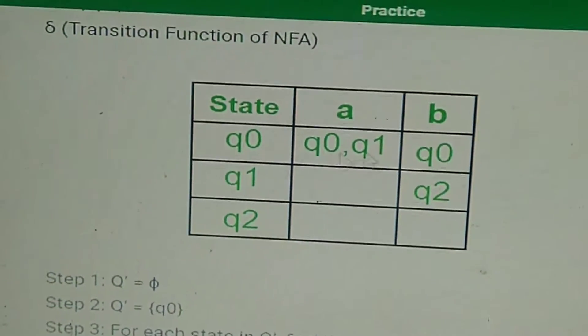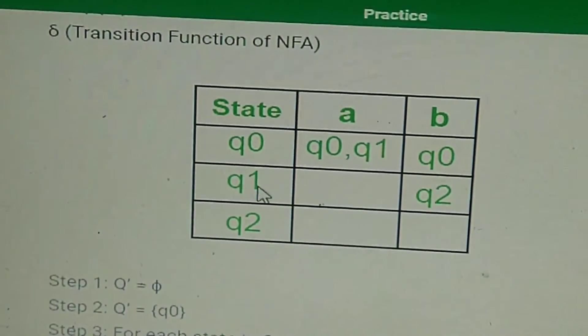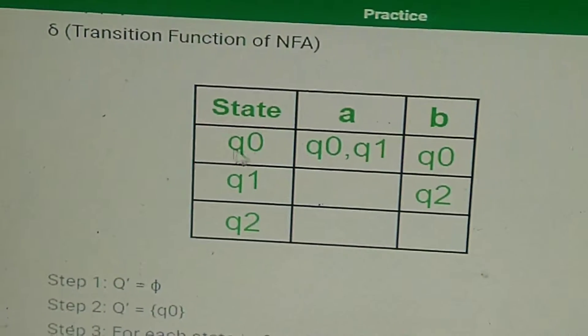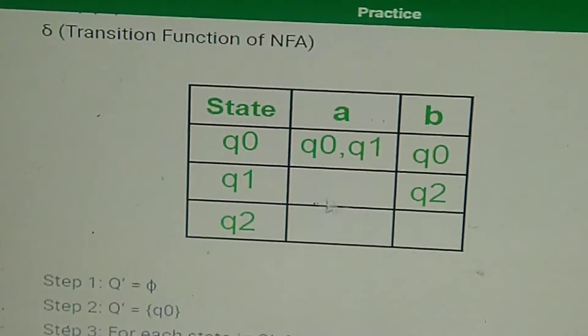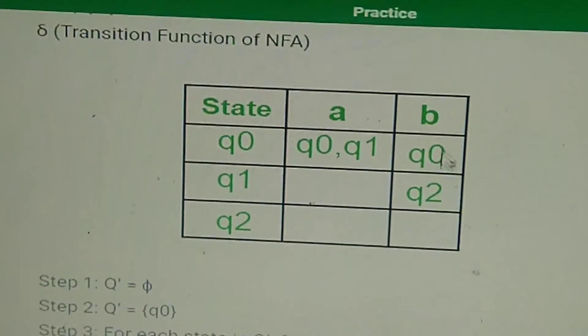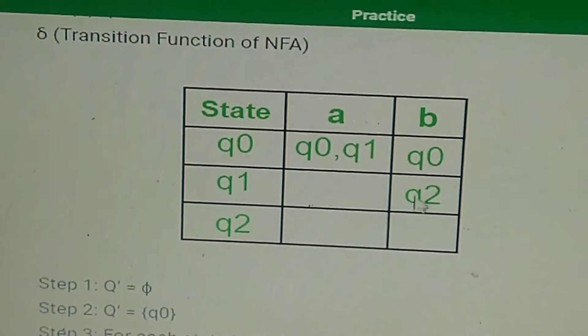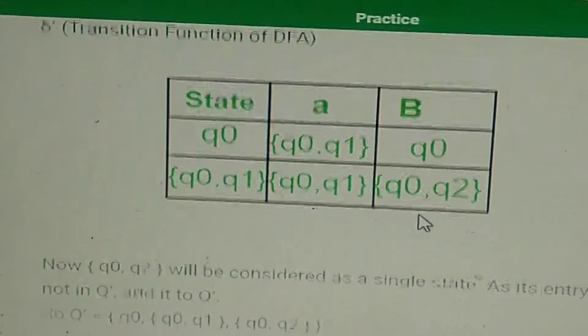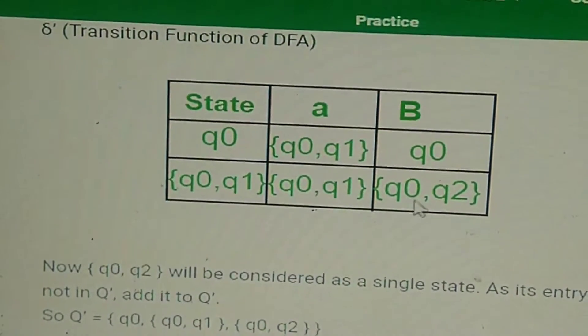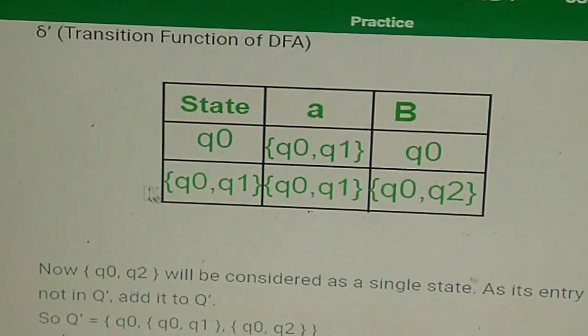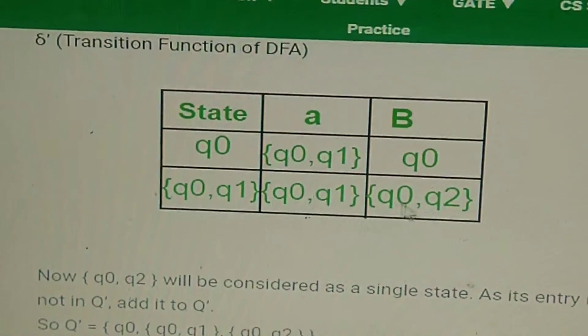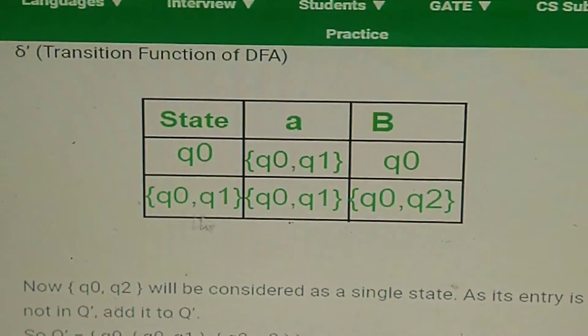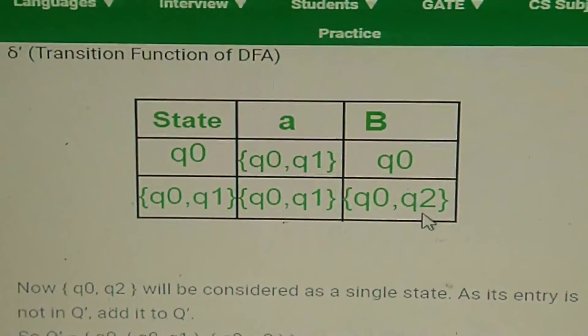Whereas when you give 'b' to q0 and q1, when you give 'b' to q0 you get q0, when you give 'b' to q1 you get q2. So you'll just union it and get q0,q2. Now again check - scan this row and you'll discover you have got a new state q0,q2.